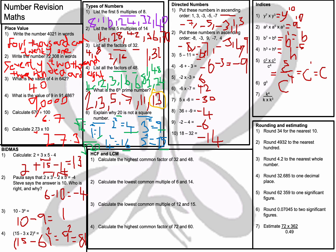Question number 6: g to the power of 0. This is a special case — anything to the power of 0 in maths is always 1. Anything to the power of 0 is always equal to 1.